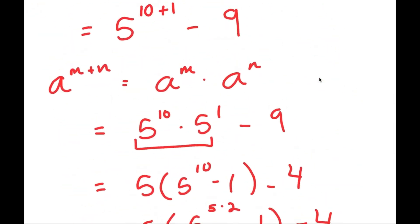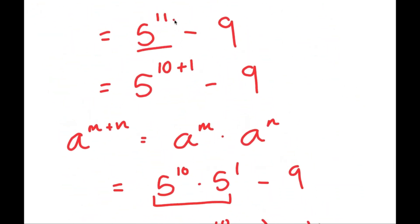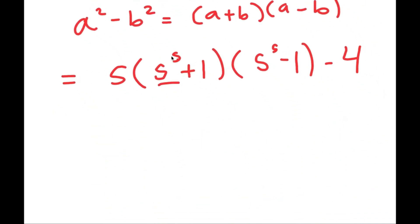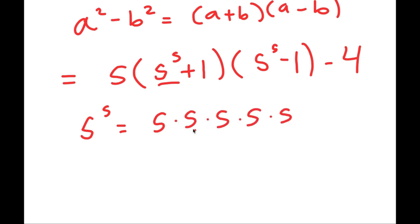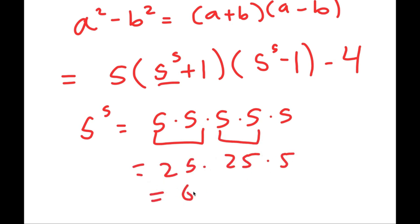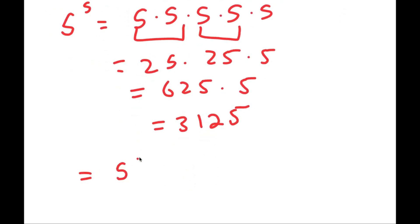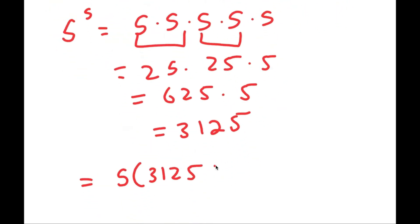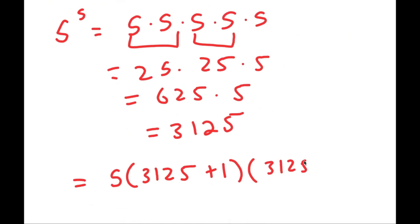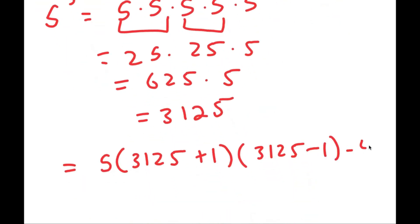Now earlier we had 5 to the power of 11 which was quite difficult to solve, but now we have 5 to the power of 5 which is actually much simpler because it's just 5 multiplied by itself 5 times. 5 times 5 is 25, so I have 25 times 25 times 5, which is 625 times 5, which is 3125. So I get 5 times 3125 plus 1, times 3125 minus 1, minus 4.